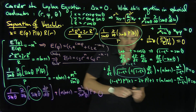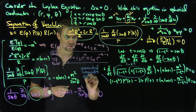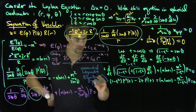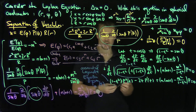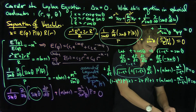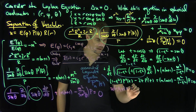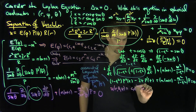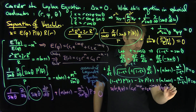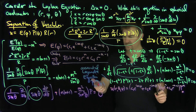This is the associated Legendre equation, which we know how to solve. The solution is the associated Legendre function P_n^m(t). So the overall solution u(r, θ, φ) = [c₁e^(imφ) + c₂e^(−imφ)] · [c₃r^n + c₄r^(−n−1)] · P_n^m(cosθ).